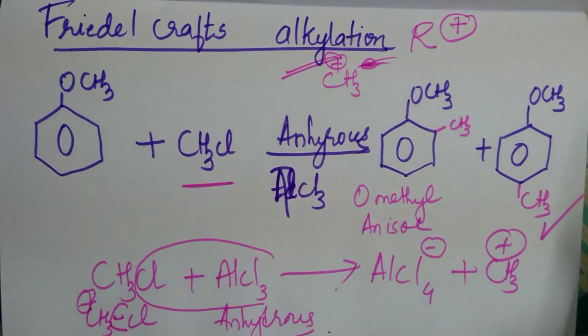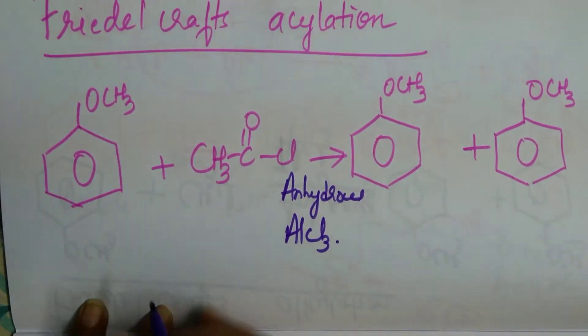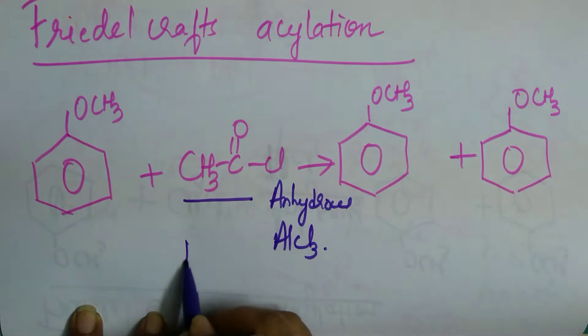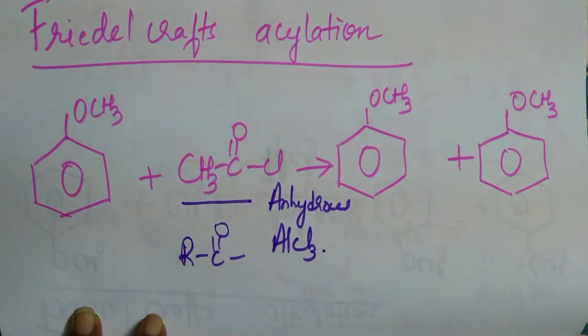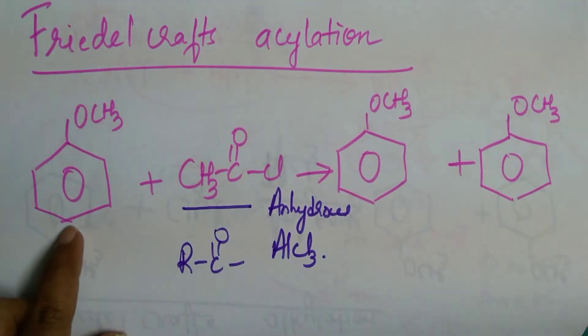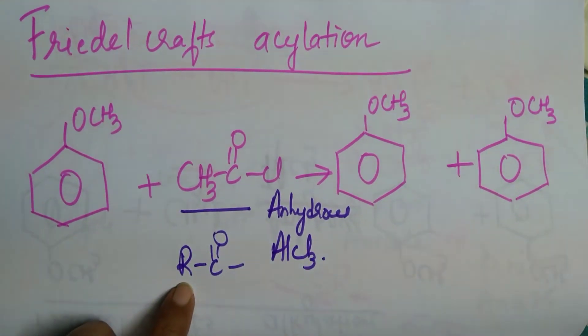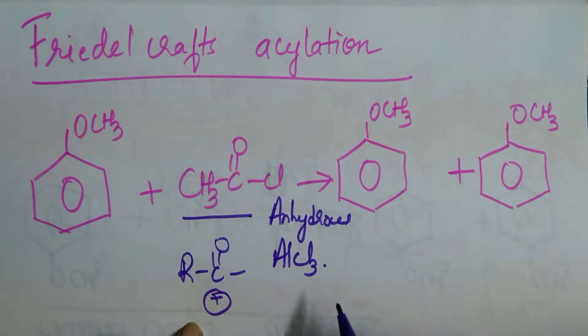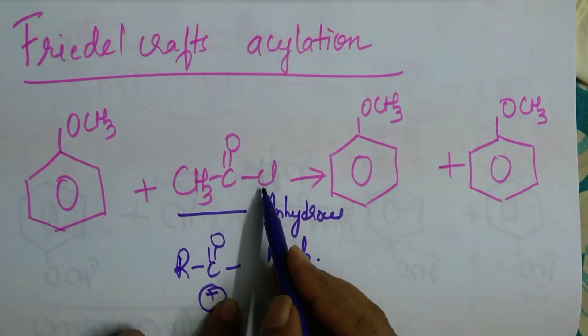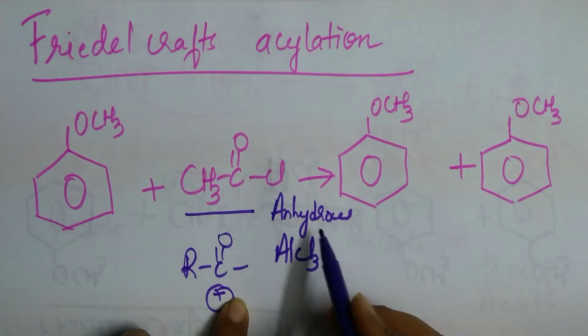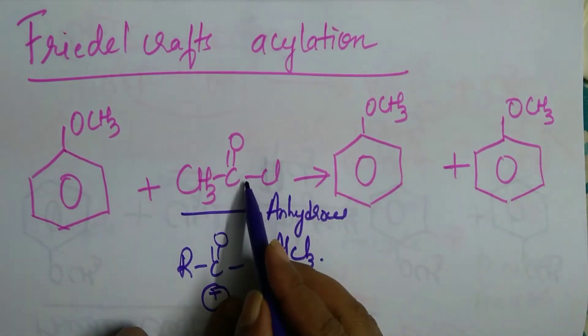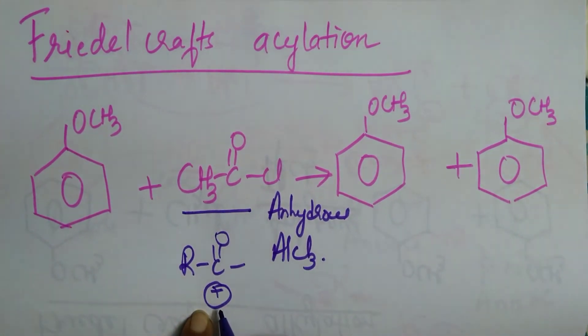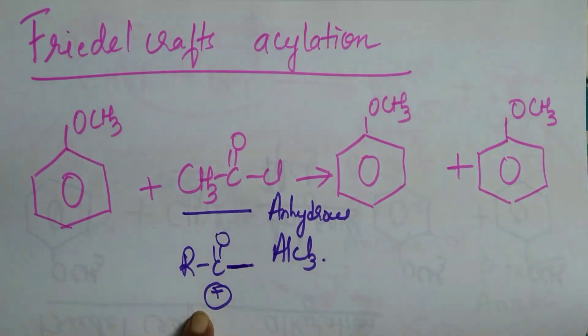To the last reaction of this chapter, that is Friedel-Crafts acylation. CH3CO group or RCO group is called an acyl group. So introduction of an acyl group into the benzene ring is called acylation reaction. So I have to generate an acyl group having a positive charge. So what should I do? I have to remove this chlorine atom from here. So I have to bring in anhydrous AlCl3 which takes away this chlorine atom and there is generation of an acyl group, carbon carrying a positive charge. This is the bond, this is not negative charge.